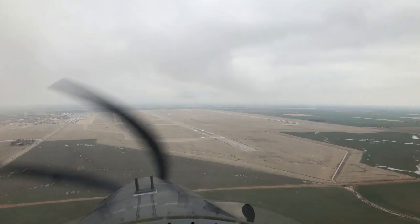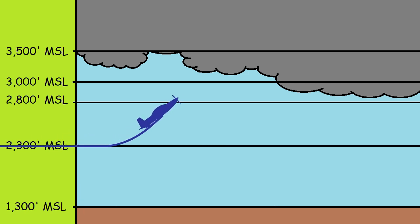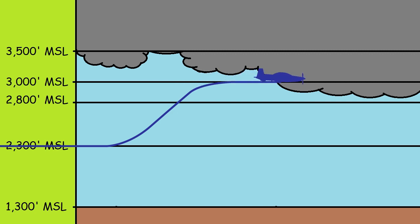At Vance, in the T-6, we fly a 1,000 feet AGL pattern altitude. When breaking out of the pattern, we climb to 3,000 feet MSL at Vance, which is about 1,700 feet AGL. If you were to break out of the restricted pattern, it would either place you in the clouds or within 500 feet of the bases, depending on what the actual ceiling is.